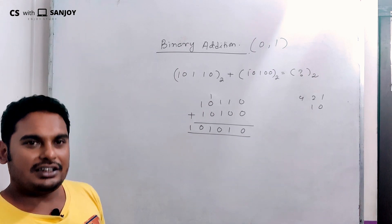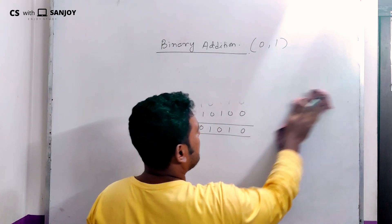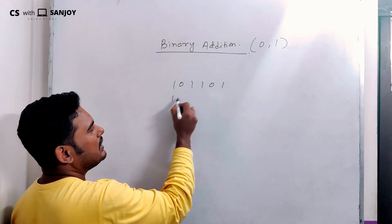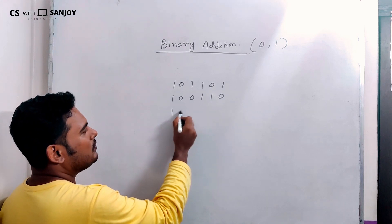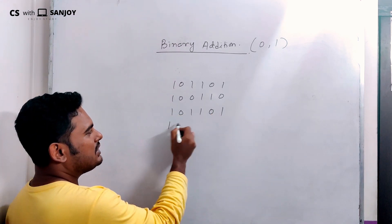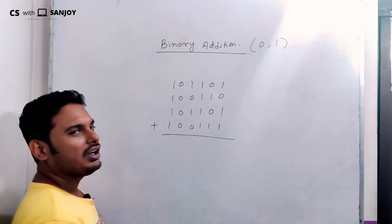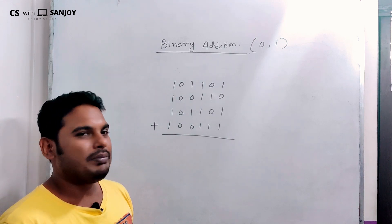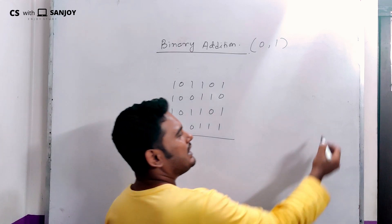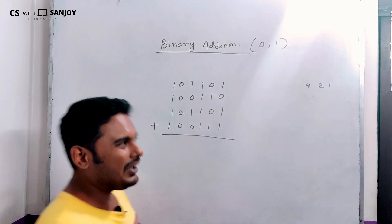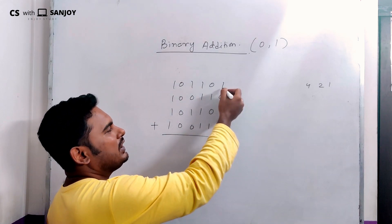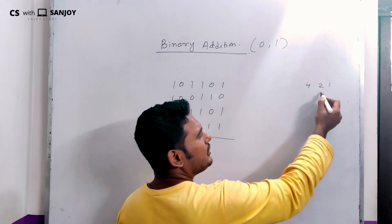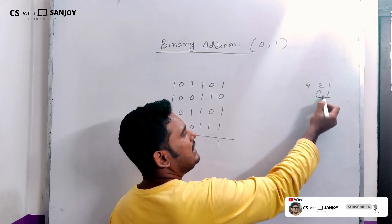Let us take another example. Binary is like decimal — it is like working with small numbers, and binary addition is very easy. We can write this side: 1, 2, 4. This is 4. Then 1 plus 1 plus 1 is 3. Three in binary is 1 1 — sum 1, carry 1.